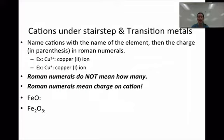If copper was bonding with chlorine, you couldn't simply say copper chloride like you did with the other ionic compounds because you wouldn't know if it's copper plus 2 or copper plus 1 coming together with chlorine. At the bottom of the screen, I have this same example with iron and oxygen.